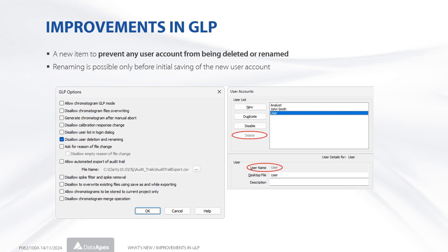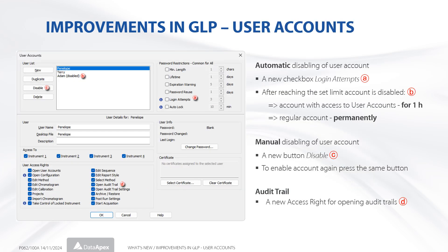A new checkbox in the GLP options dialog allows disabling the deletion or renaming of an existing user. You can edit the user name only after the creation of the user, before saving the user accounts. The user account can be disabled manually or automatically.